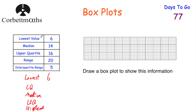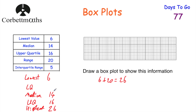The lowest value is six, the median is 14, and the upper quartile is 16. So we need to find the lower quartile and the highest value. Starting with the highest value: the largest value subtract the smallest gives the range, so if I take six and add 20 that gives 26. So the highest value must be 26 — and just to check: 26 take away six is 20, fantastic. For the lower quartile, we know the upper quartile is 16 and the interquartile range is five, so the lower quartile must be 16 subtract five, which equals 11.